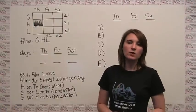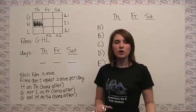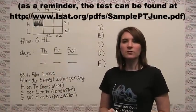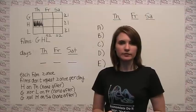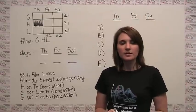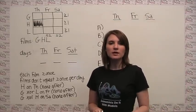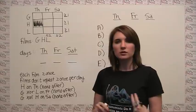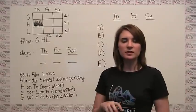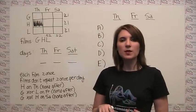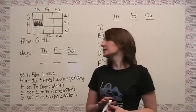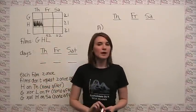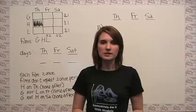Question 2 in this game, question 7 overall in the section, simply reads: which of the following cannot be true? For this particular question, we're not given any new information — we're not told anything specific to this question — so the best we can do is take the information we've already been given and try to match it up against the answer choices.